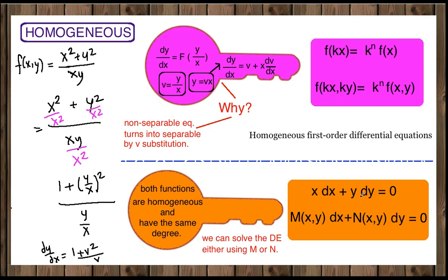Now let's talk about the second type of homogeneity. In this type, the function takes the form M(x,y)dx plus N(x,y)dy equals 0. What is important here is that both functions M and N must each be homogeneous and must each have the same degree — first degree and first degree, or second degree and second degree. In this case, we can solve the differential equation using either M or N: you can pick the M function and integrate to solve, or you can pick the N function. That's it for this video. Thank you for watching.